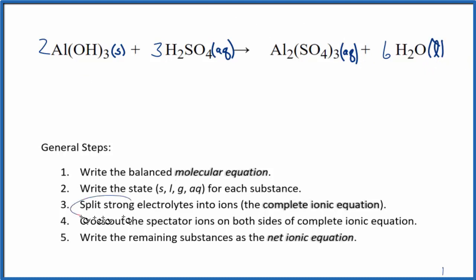Next, we split the strong electrolytes into their ions. And that will give us the complete ionic equation. When we do net ionic equations, we don't split solids. So we're just going to write 2AlOH3.